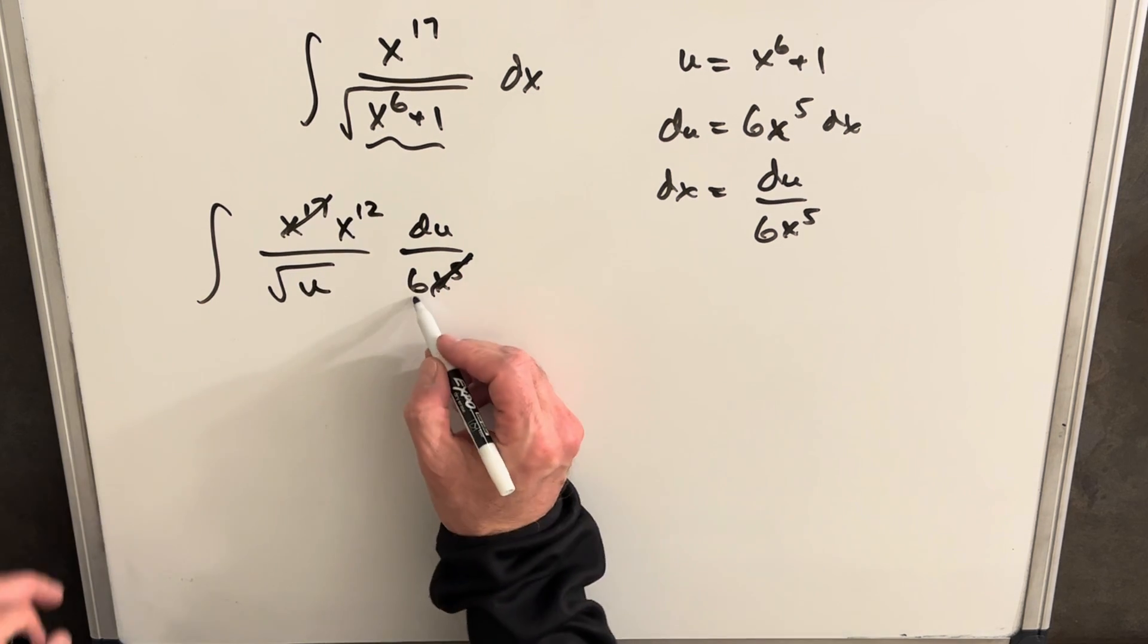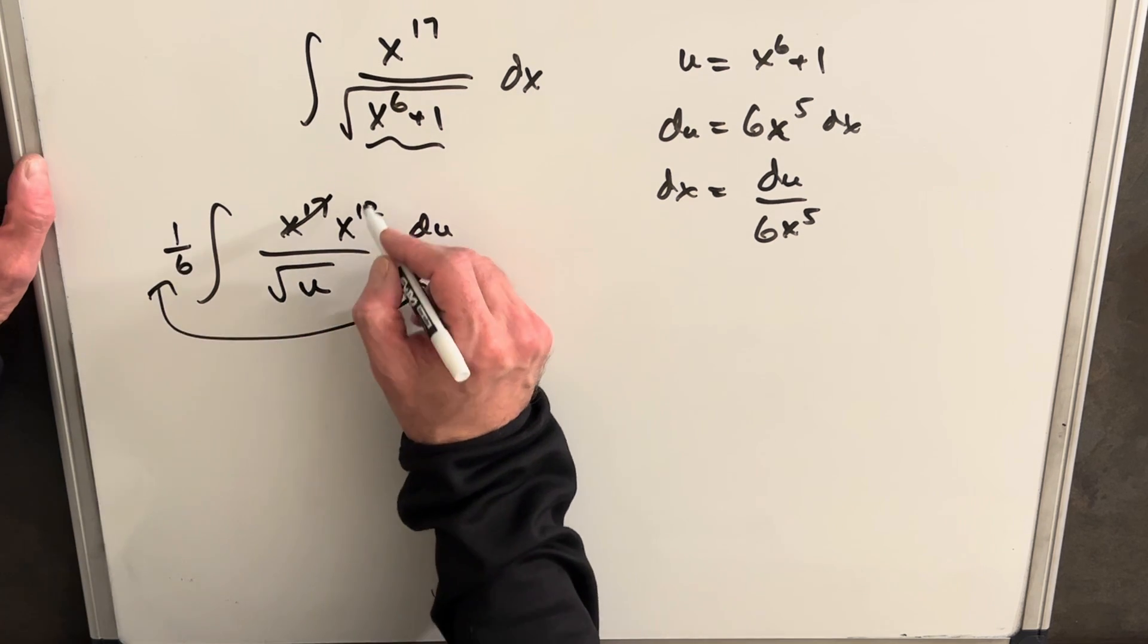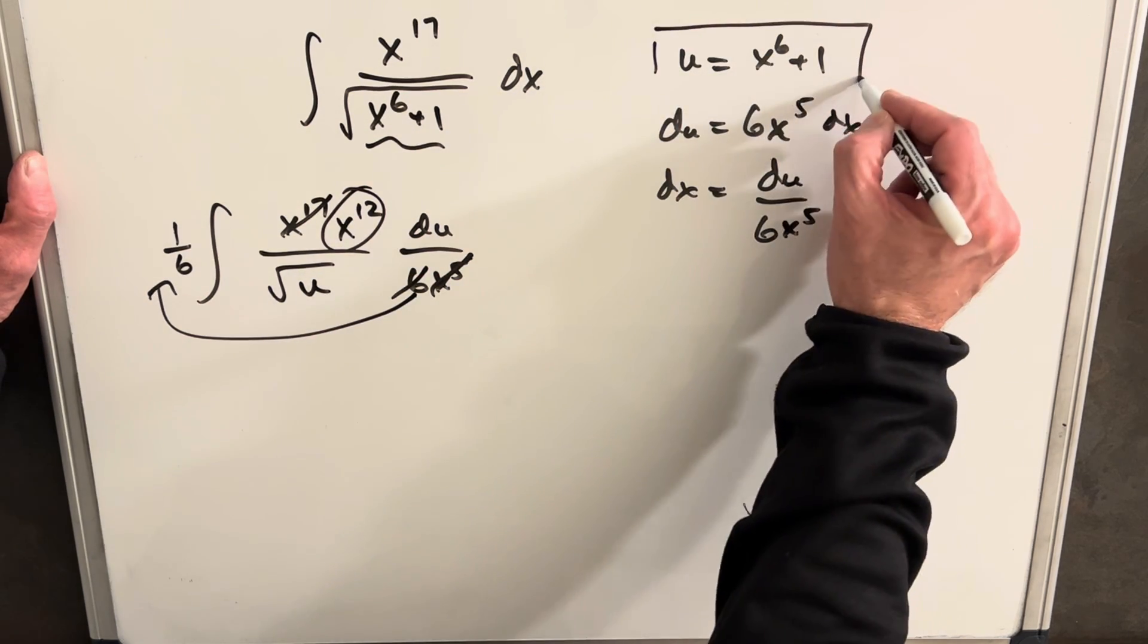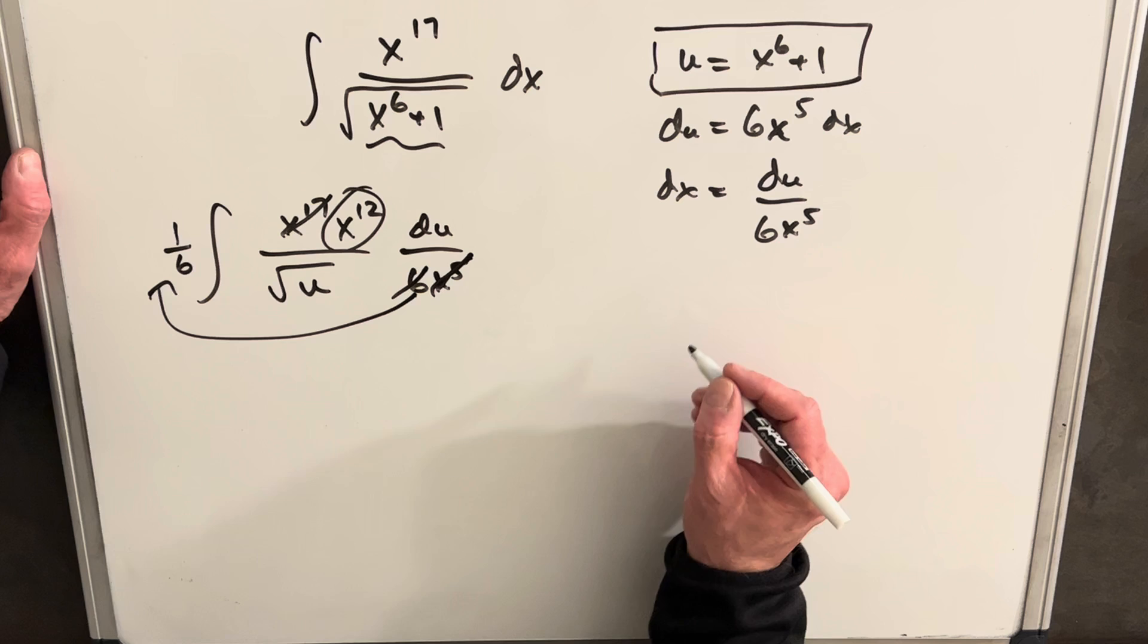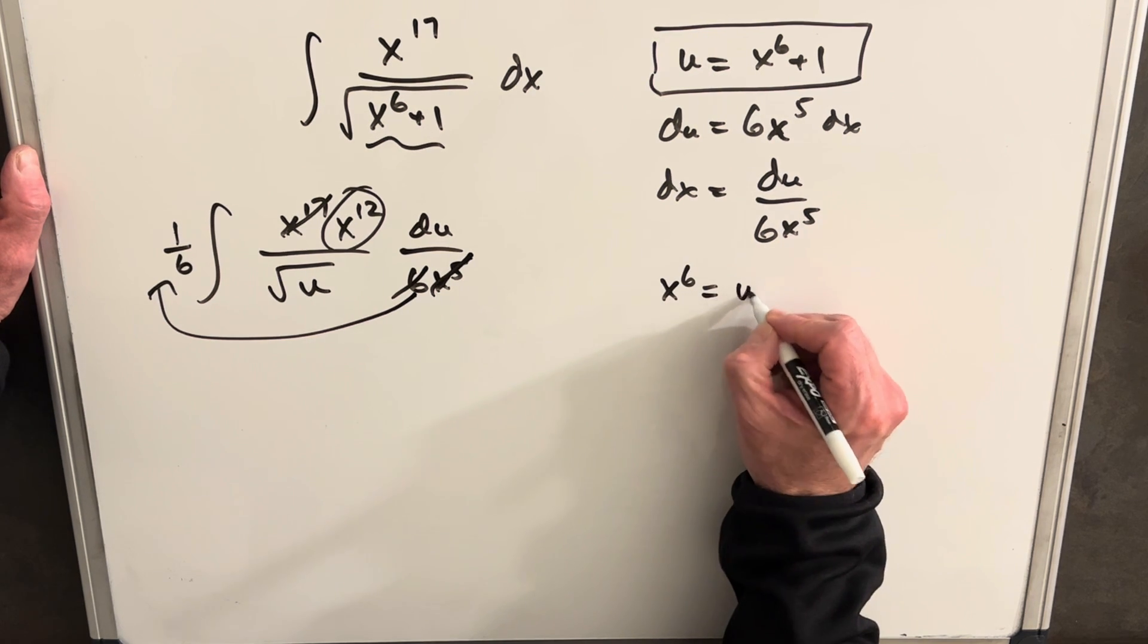Next, what I want to do is take this 6 out front as a 1 6th, and we just need to deal with this x to the 12th. Now we can get from this, we can get an expression for x to the 6th, so we can find that x to the 6th is u minus 1.